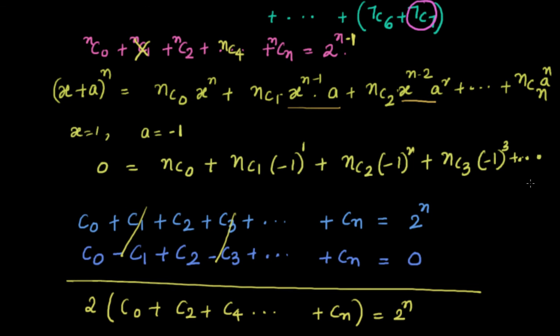That was an interesting example — simple but requiring some out-of-the-box thinking. We know binomial expansion (X + A)^N, but the key insight is how to apply it to find the sum of binomial coefficients. We take X = 1 because 1 to any power is 1, and to cancel odd terms we take A = minus 1, since (−1)^odd = −1 and (−1)^even = +1. This lets us easily split or sum the binomial coefficients. Keep smiling and sharing — bye for now!